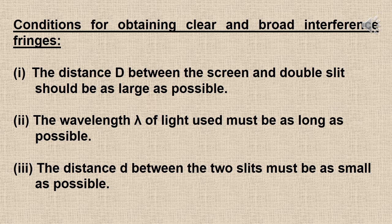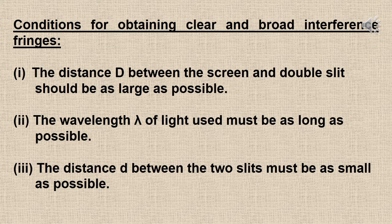There are three conditions for obtaining clear and broad interference fringes. The distance between the screen and the double slit should be as large as possible. The wavelength of the light used must be as long as possible. The distance d — small d — between the two slits must be as small as possible. If you maintain all three conditions, only then we are able to observe the clear and broad interference fringes.